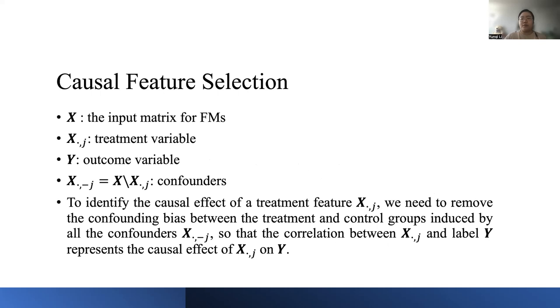To identify the causal effect of a treatment feature, we need to remove the confounding bias between the treatment and control groups induced by all the confounders so that the correlation between X_j and label Y represents the causal effect of X_j on Y. And the causal features are naturally selected by obtaining higher weights during the learning process.